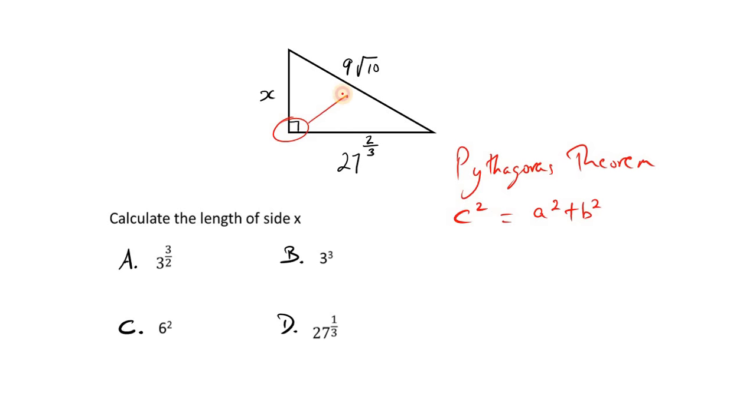So, opposite the right angle, we have c, which is the length of this side. This is the hypotenuse. So we're going to replace c with 9 root 10, and that's the value of c, so we have to square that. And the a and b are the lengths of these two sides.